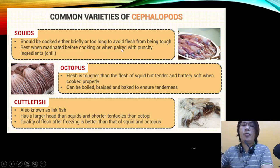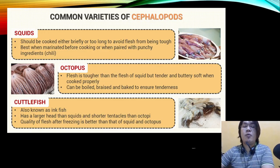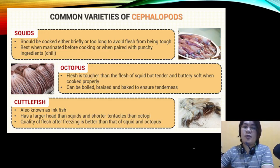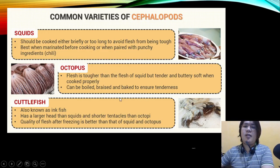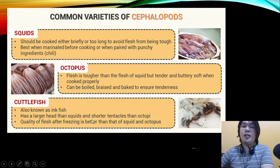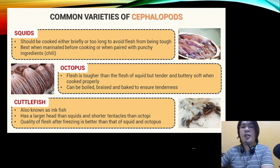Squid should be cooked either very briefly or for a long time to avoid tough flesh; they are best when marinated before cooking or paired with punchy ingredients like chilis. Octopus flesh is tougher than squid but becomes tender when properly cooked; it can be boiled, braised, or baked to ensure tenderness. Cuttlefish, also known as inkfish, has a larger head than squid and shorter tentacles than octopus, and the quality of its flesh after freezing is better than that of squid or octopus.